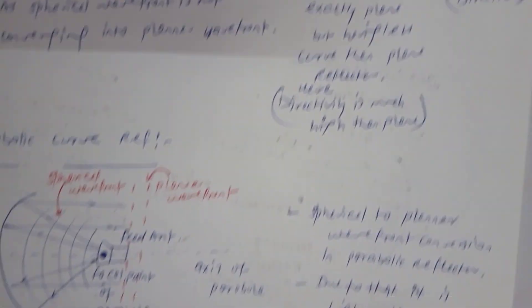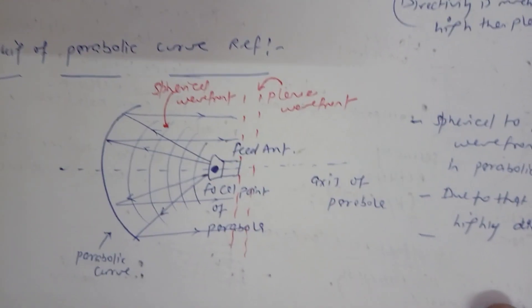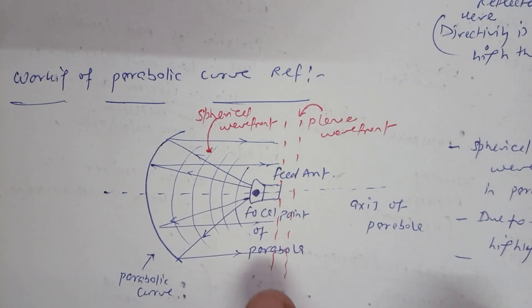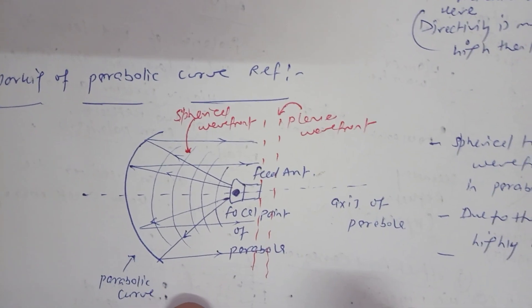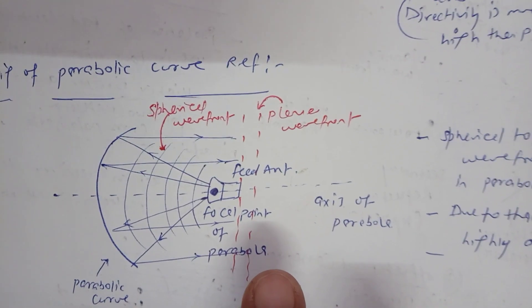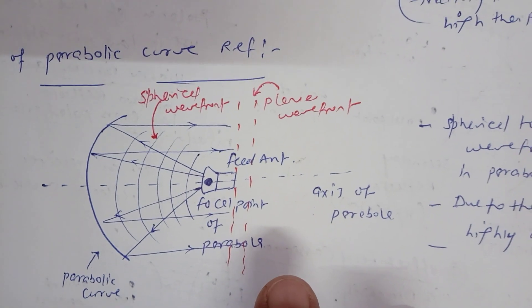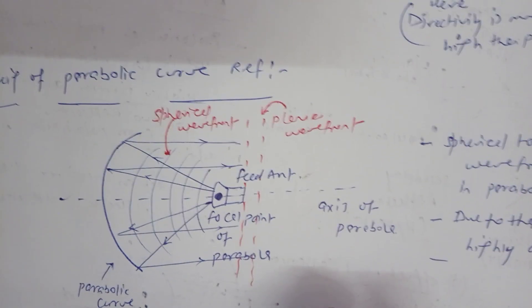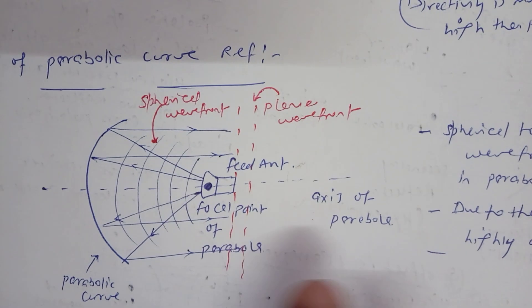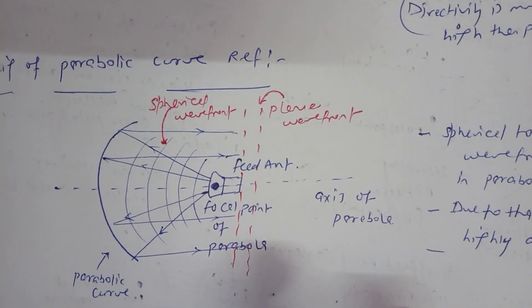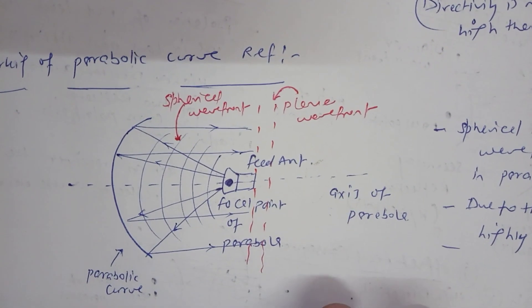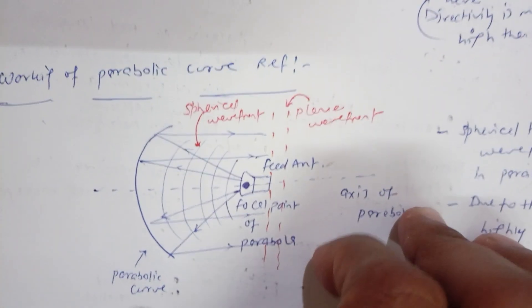Looking at the design of the parabolic curve reflector antenna: we use a parabolic reflector with a feed antenna placed on the axis of the parabola at its focal point. A horn antenna is used as the feed. The signal from the horn antenna reflects off the parabolic reflector and is converted into a planar wavefront — spherical wavefront converts to planar, giving high directivity.